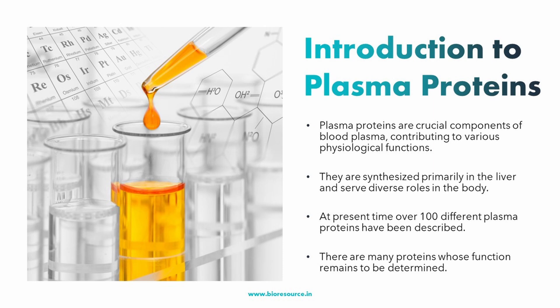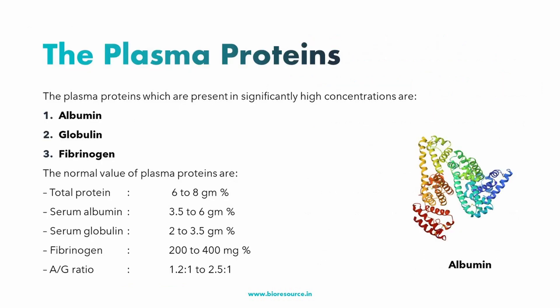Over 100 different plasma proteins have been described. The plasma proteins present in significantly high concentration are albumin, globulin, and fibrinogen. The normal values are 6 to 8 gram percentage for total protein, 3.5 to 6 gram percentage for serum globulin, and 200 to 400 mg percentage for fibrinogen.